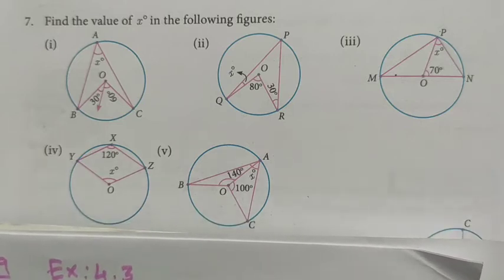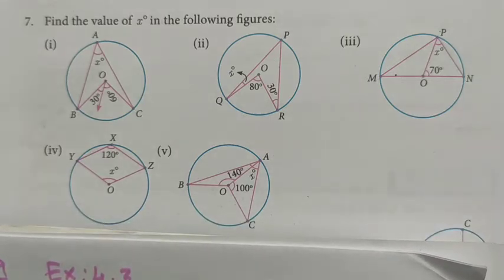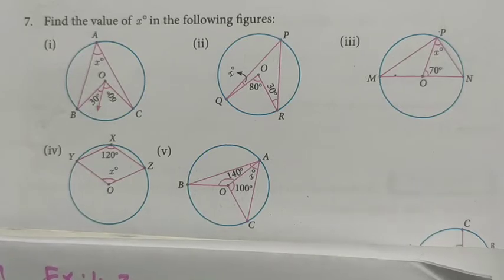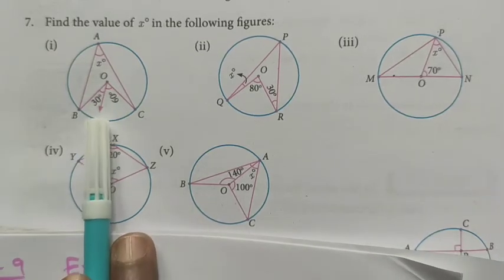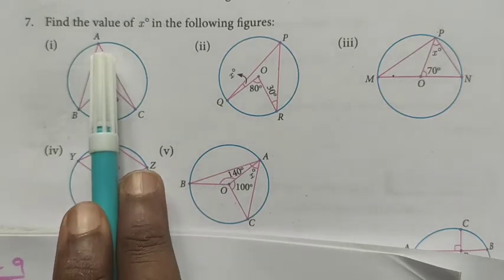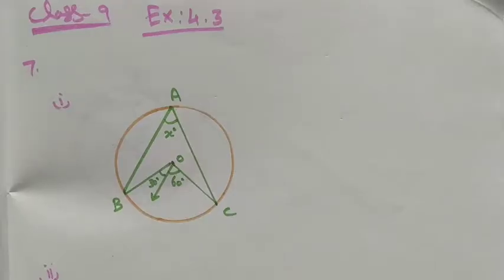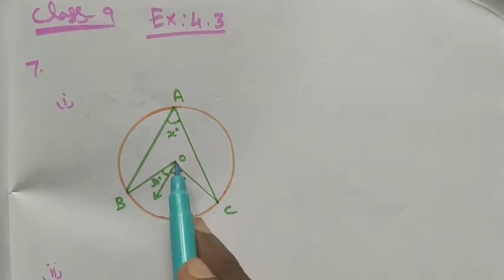Hi students, class 9, exercise 4.3, question number 7: find the value of x in the following figures. Five roman numerals are given. Let's see them one by one. The first roman numeral — we want to find what is x, so in the first figure, the angle BOC is given.